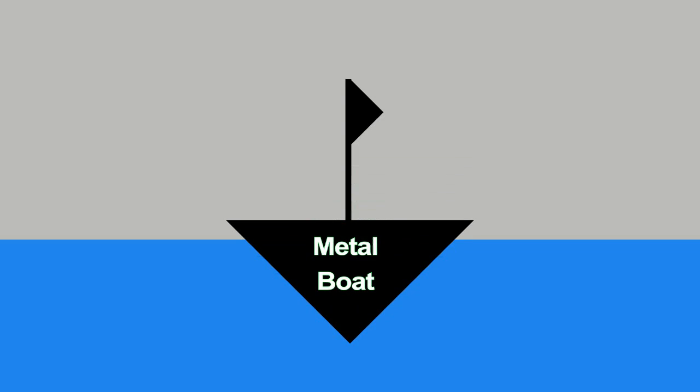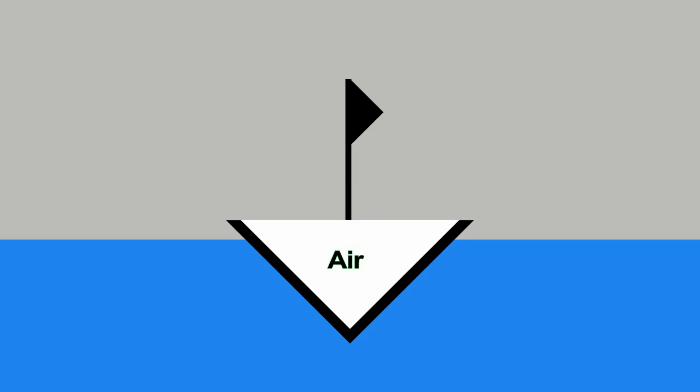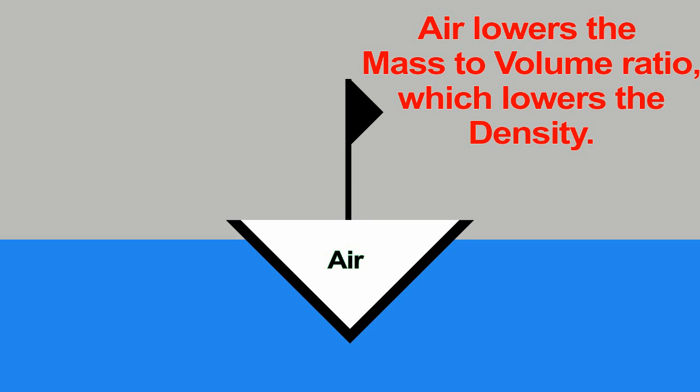Then why do boats float? Boats float because they are filled with air. And the air makes the mass to volume ratio or density of the boat lower than the water. And when the air is replaced with water, the boat sinks.